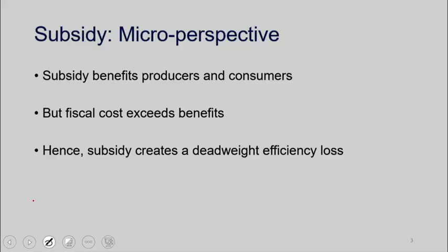So if you give a subsidy that shifts the supply curve, it will benefit both producers and consumers, but we know that the fiscal cost will exceed the benefits, and so we know that there's this triangle which is the deadweight loss from a subsidy.